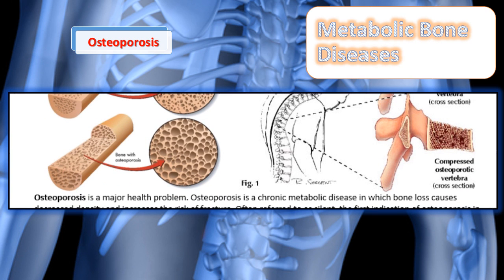Primary osteoporosis is caused by a combination of genetic, lifestyle, and environmental factors. Bone mineral density determines bone strength, and during the peak years of about 25 to 30 years, osteoclastic activity and osteoblastic activity work at the same rate. But after the peak years, bone resorption activity exceeds bone building activity and bone density suffers as a result.